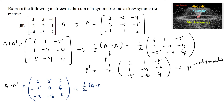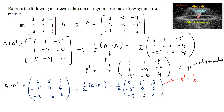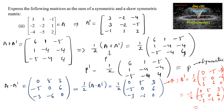So 1/2 times of A minus A transpose equals 1/2 of [0,5,3; -5,0,6; -3,-6,0]. Let us call this Q. Then Q transpose equals 1/2 times of [0,-5,-3; 5,0,6; -6,3,6; 0] — wait, interchanging rows and columns gives [0,-5,-3; 5,0,-6; 3,6,0], which equals negative Q. So Q is a skew symmetric matrix.